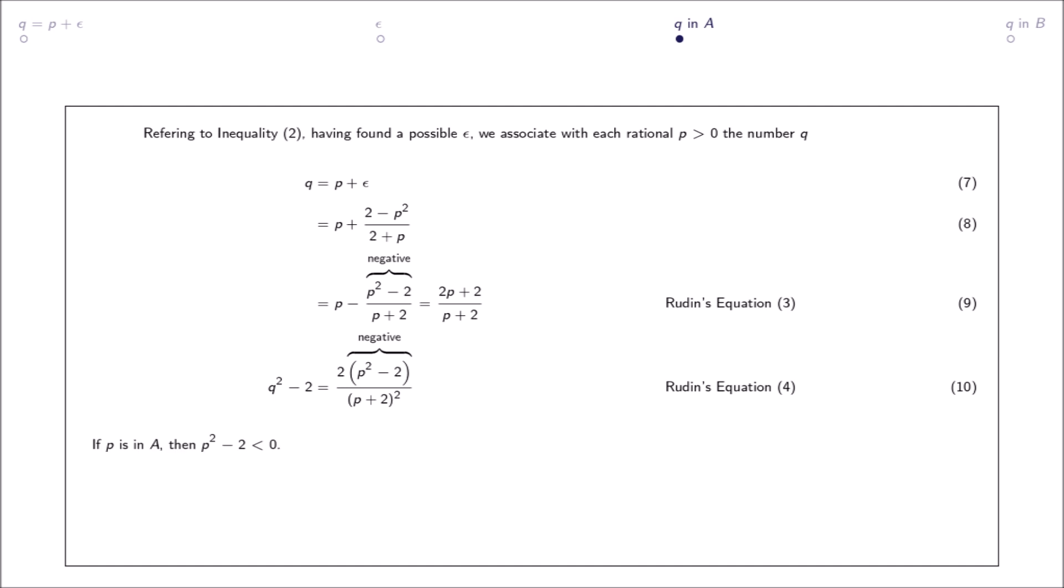If p is in A, then p squared minus 2 is less than 0. And so, by equation 9, the subtrahend is negative and p is less than q. By equation 10, the equality of negative values means q squared minus 2 is less than 0, and so q squared is less than 2. Thus, q is in A.